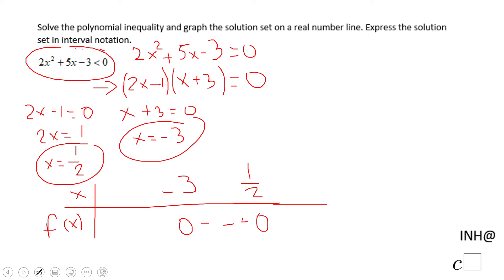Then a number larger than one-half will be 1. We have 2 times 1 in the same spot. 2 times 1 is 2 minus 1, which is positive. And if you put 1 in the other factor, the product of 2 positive numbers will be positive. And if you pick negative 4, you'll see it's also a positive number.